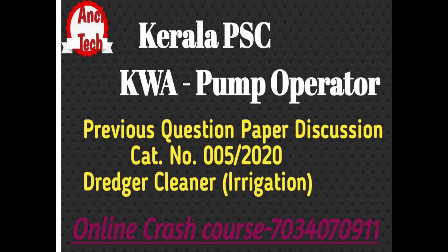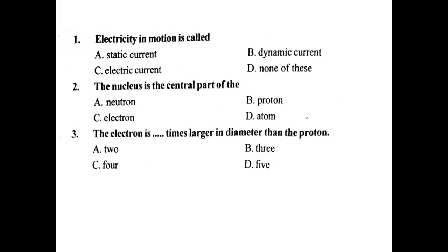First question: Electricity in motion is called dash. Options: static current, electric current, dynamic current, none of these. Answer: Electricity in motion is called electric current.